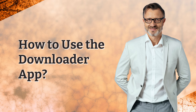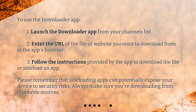How to use the Downloader app? To use the Downloader app: Step 1: Launch the Downloader app from your channels list. Step 2: Enter the URL of the file or website you want to download from in the app's browser. Step 3: Follow the instructions provided by the app to download the file or sideload an app.